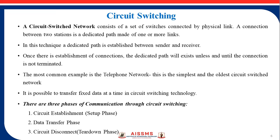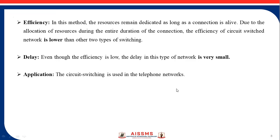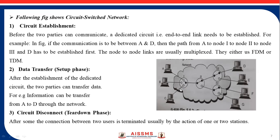There are three phases of communication through circuit switching. The first is circuit establishment, which is called the setup phase. The second is the data transfer phase. The third is circuit disconnection, also called the teardown phase. For circuit establishment, before the two parties can communicate, a dedicated circuit — that is, an end-to-end link — needs to be established. In the circuit switched network shown in the figure, if communication is between A and D, then the path from A to node 1, to node 2, to node 3, and then to D has to be established first.